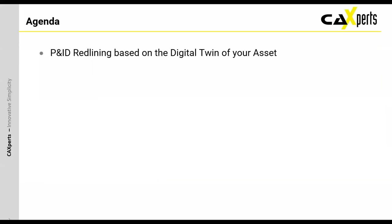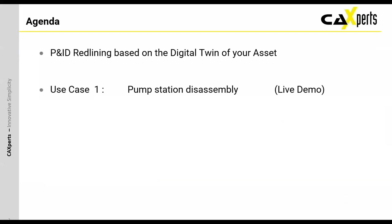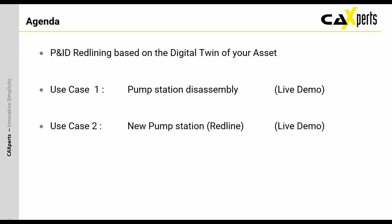We will first discuss in general about redlining and how this is handled. It will be followed by two use cases which I will show in a live demo. The first one is about disassembling a pump station and the second one is about placing a new pump station. I will show this in IntelliPID on two systems: PIDs coming from Smart PID, but also a small example on PIDs which come from PDF PIDs.